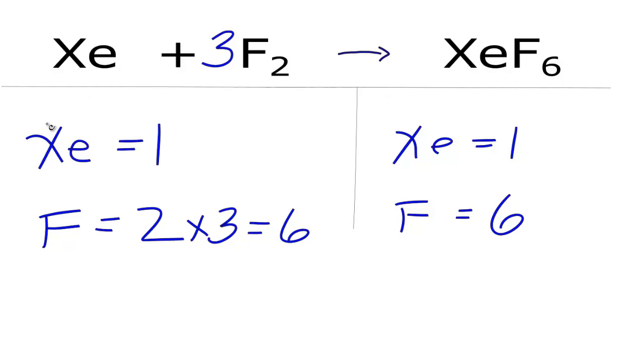But we can change the coefficients. And now if you want to report the coefficients for this balanced equation, you could say one Xe plus three F2 yields one XeF6. This is Dr. B with the balanced equation for xenon plus fluorine gas yields xenon hexafluoride. Thanks for watching.